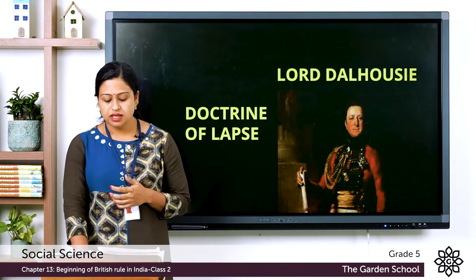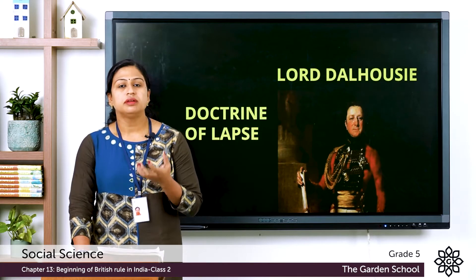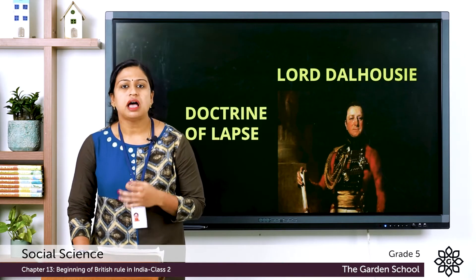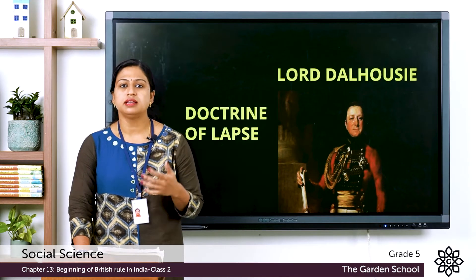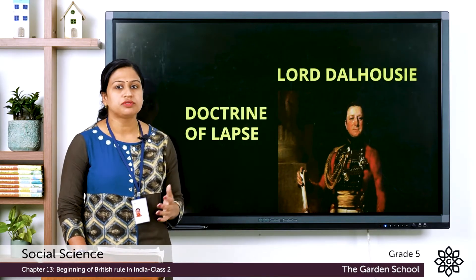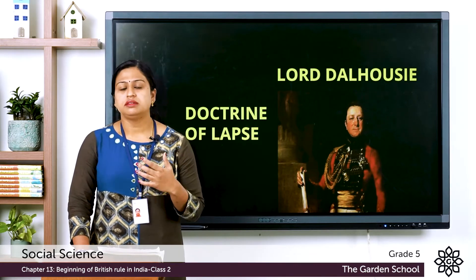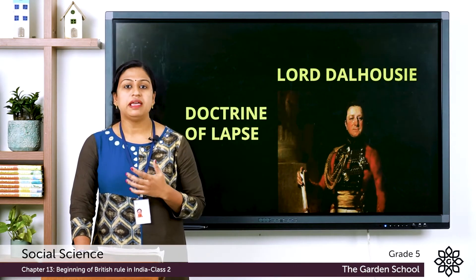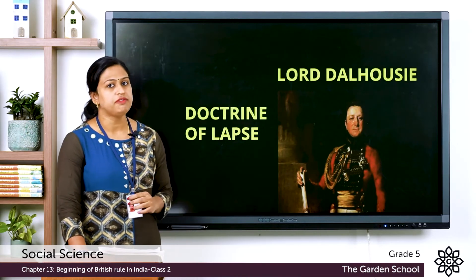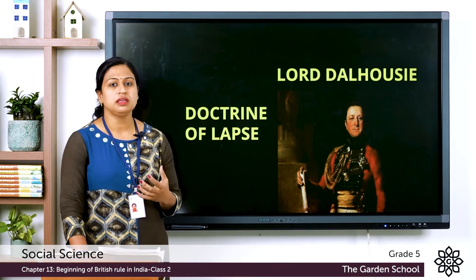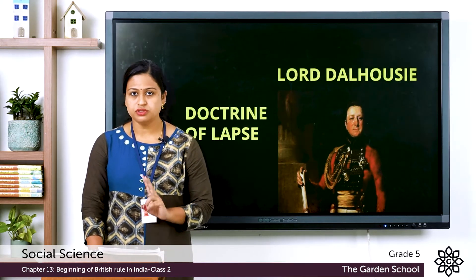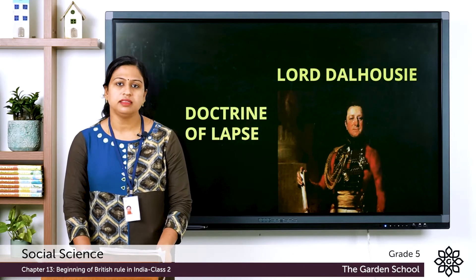Here, legal heir means somebody who will receive the power or property after the death of the owner. In India, there was a practice that after the death of the king, his successor would be either his son, daughter, wife, or mother. But after the introduction of the Doctrine of Lapse, if the king did not have any male heir or male successor, the territory would come under British rule. This was the condition of the Doctrine of Lapse — another policy through which the British strengthened their position in India. These were the two policies: Subsidiary Alliance and the Doctrine of Lapse.